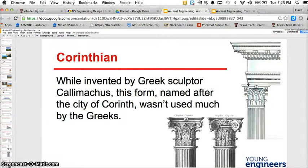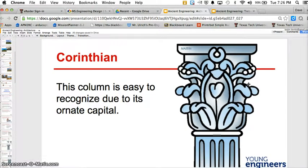Corinthian, along with it by Greek sculptor Callimarchus. This form, named after the city of Corinth, wasn't used much by the Greeks, used more by the Romans. This column is easy to recognize due to its ornate capital. You see how fancy it is. The fanciness, if you will, is increased with each level.